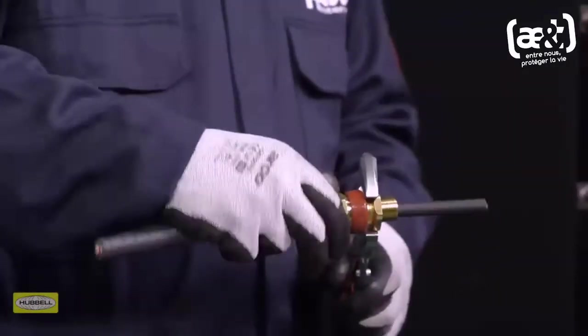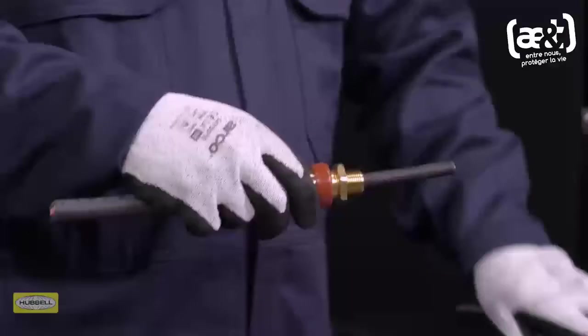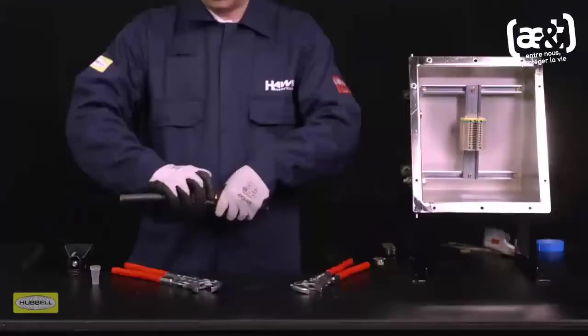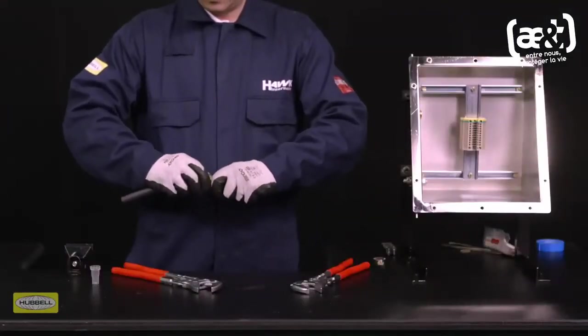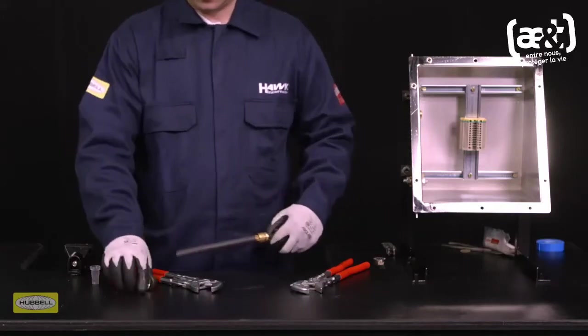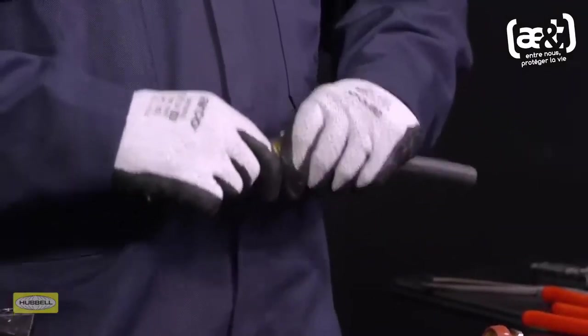Unscrew the middle nut. The armor clamping ring should now be locked in place. Visually inspect that the armor or braid has been successfully clamped between the spigot and the armor clamp ring.